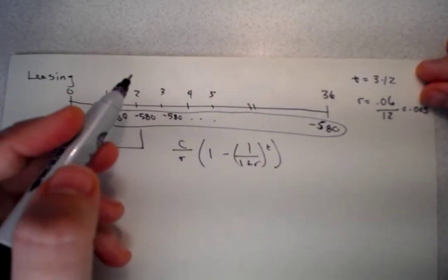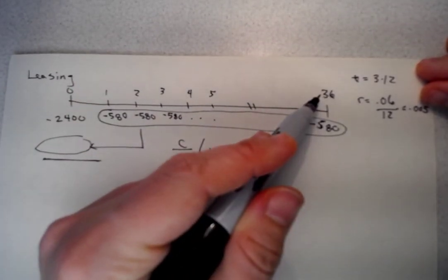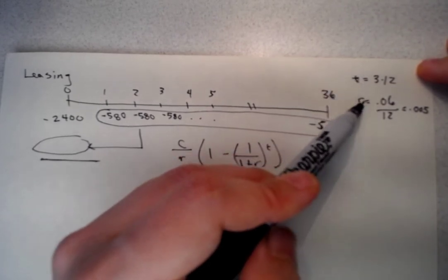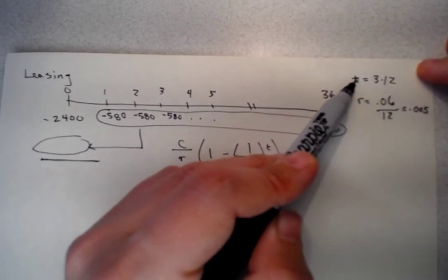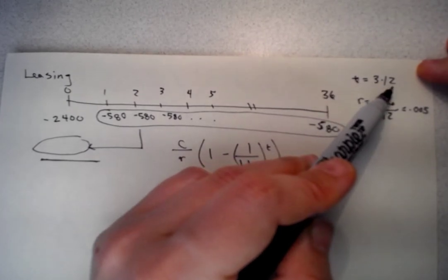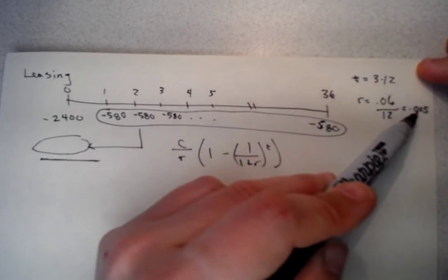Notice the payments are all the same all the way across, and T is going to be 36. Just to let you know, we took our annual interest rate and made it monthly. We took our three years and made it monthly. So we made sure that the units matched here.